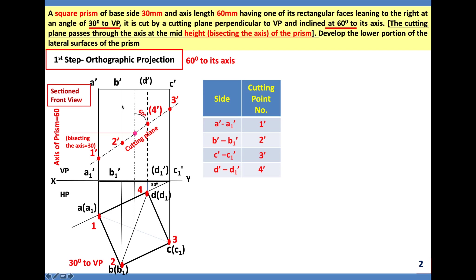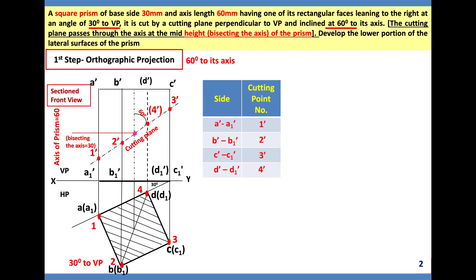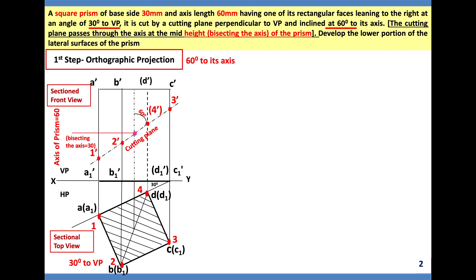This is called the sectioned front view, and you have to do the hatching. Hatching is drawn at 45 degrees to the boundary with equal spacing — it represents or tells that the object or the square prism is cut or sectioned. This is called the sectional top view. Line conventions include: continuous thick line, projection line, hidden line, axis line, and hatching lines.